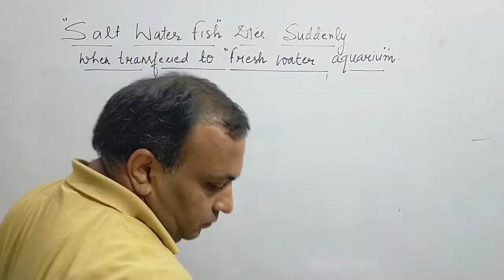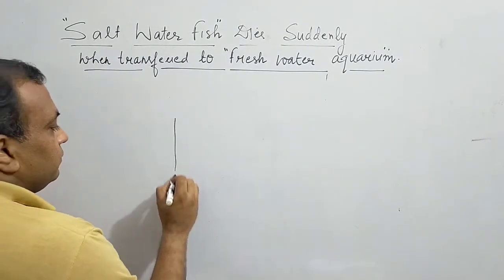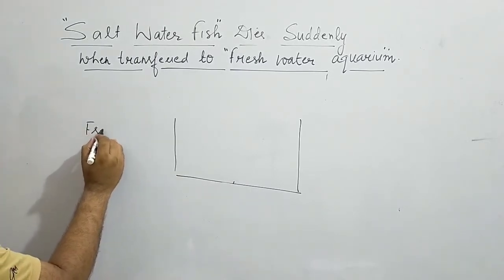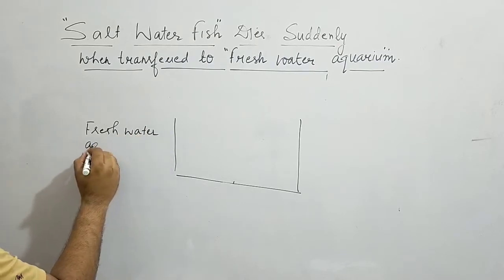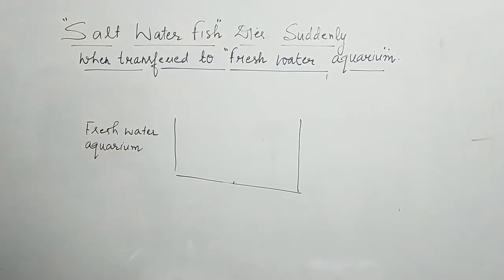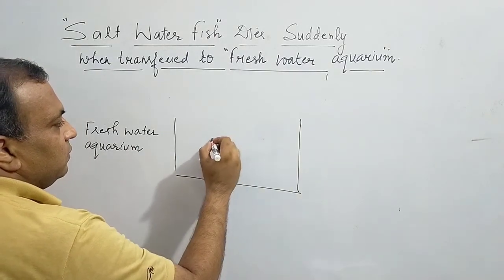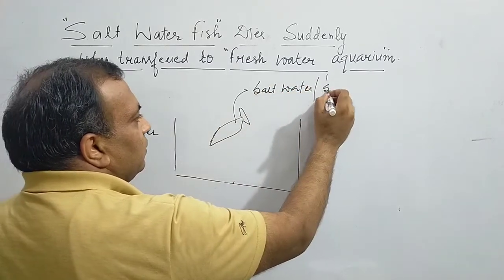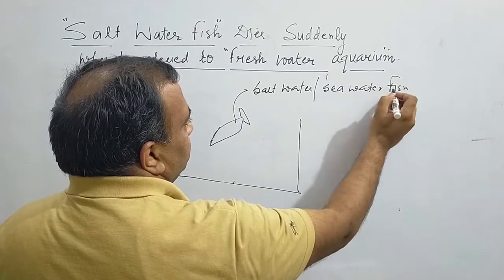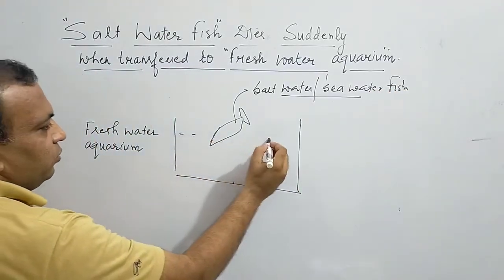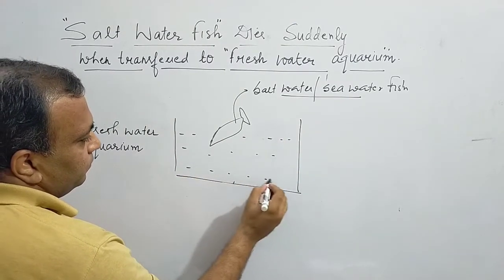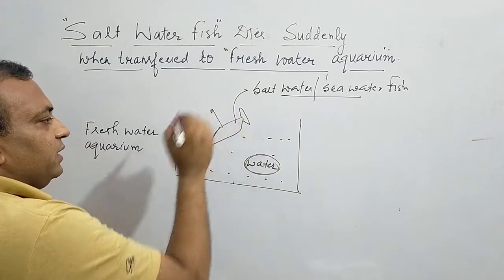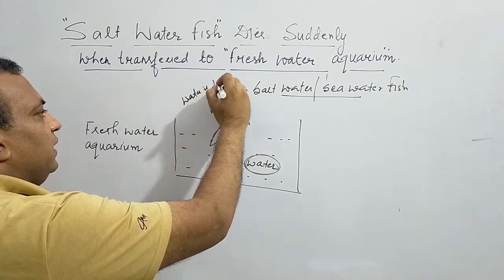Now I will explain the situation. This is a fresh water aquarium, and this is the salt water — or you can say sea water — fish. When this fish is shifted to fresh water, the water concentration inside the fish is less.